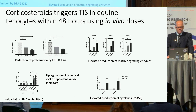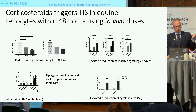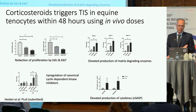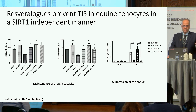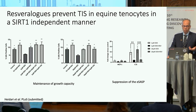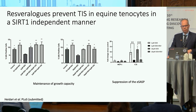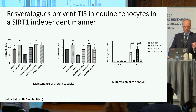Using doses significantly below those achieved in vivo, corticosteroids will senesce equine tenocytes. That senescence is associated with upregulation of standard CDKIs, a restricted SASP we term the ESASP, and upregulation of a range of MMPs that degrade the tendon — which is not good news in a tendon. The good news is that we are able to prevent this therapy-induced senescence using compounds from our resveratrol analogue library in a way that is SIRT1-independent, because compound V29 in our library does not interact with SIRT1 at all. This hopefully means we can improve outcomes where corticosteroids are used in tendon injury.